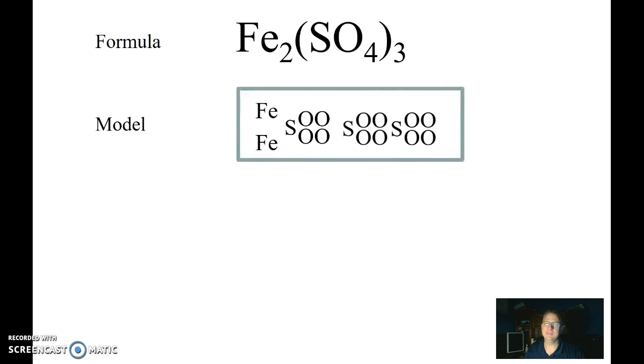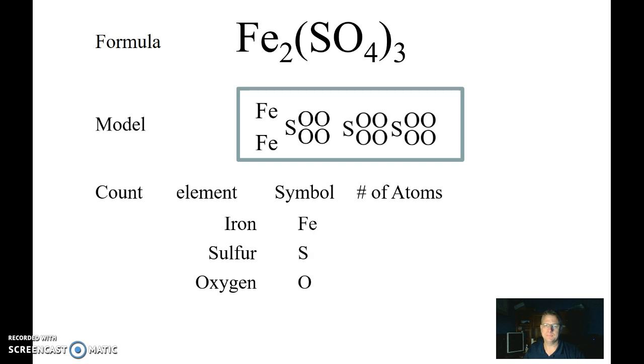In this case, the SO4. So now, this is my molecule. This is my model. So I can count them up. Fe is iron, S is sulfur, and the O is oxygen. If I'm counting up my irons, I've got two of them. If I'm counting the sulfurs, I've got three of those. And I'm counting up the oxygen, I have 12, for a total of 17.